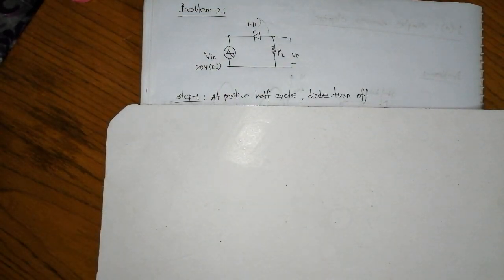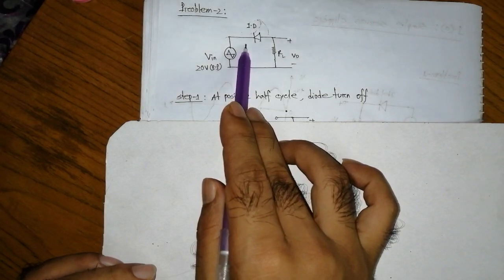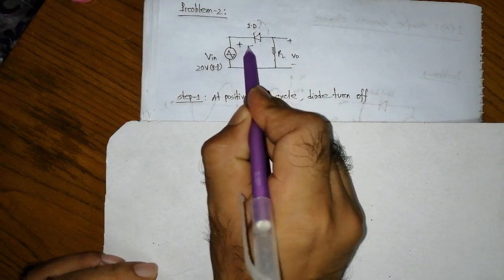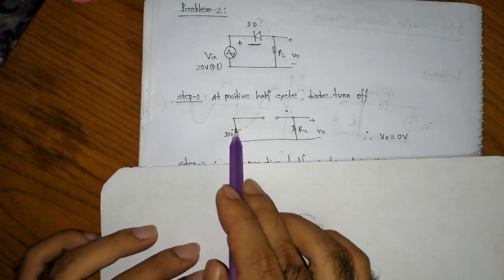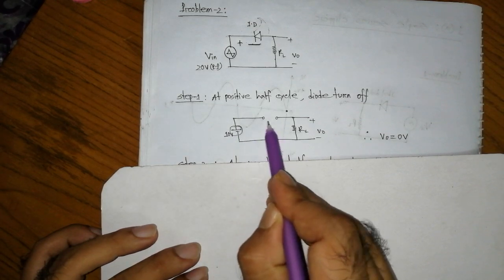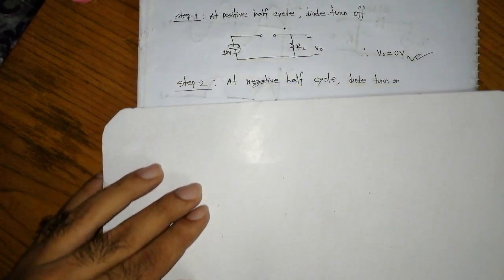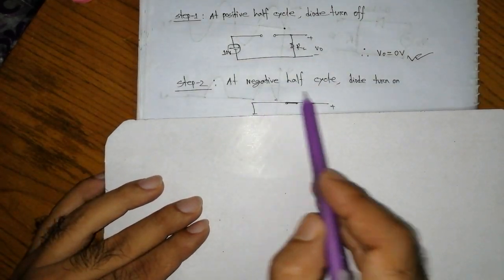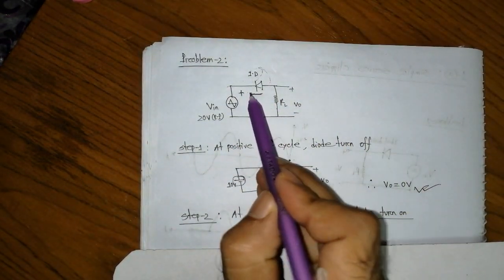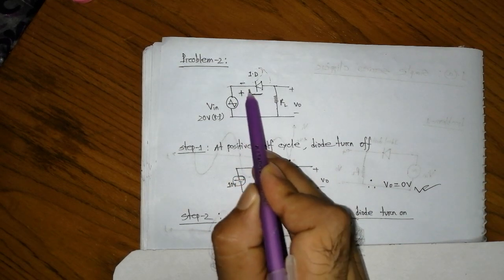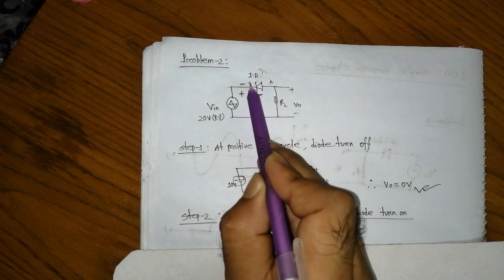To calculate the positive half cycle: if you have a positive half cycle, the diode will have a reverse bias and will act as an open circuit. For the negative half cycle, the diode turns on — it is forward biased.